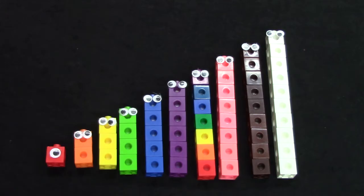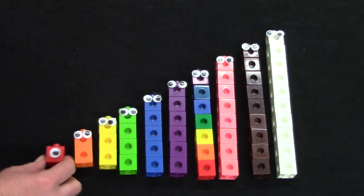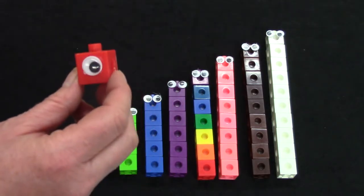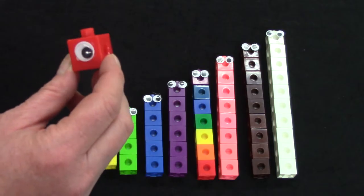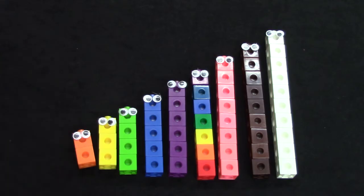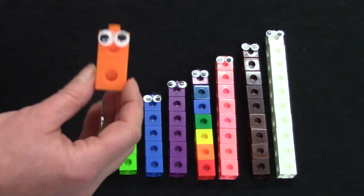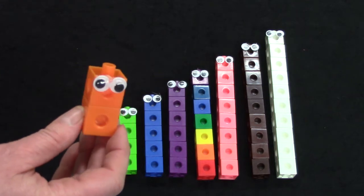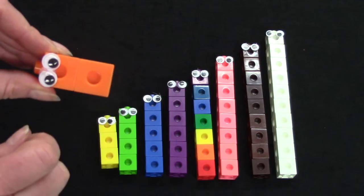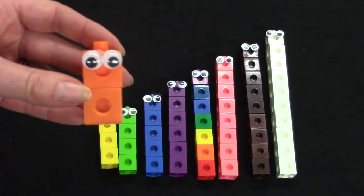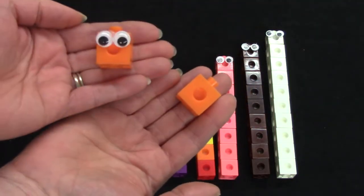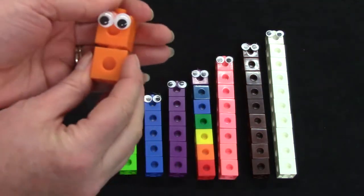For us to have an even number, our cubes would need to have a buddy. 1 is an odd number because it's all alone. It doesn't have a buddy. So I'm going to move number 1 out because it is not an even number. The number 2 is an even number. There's 2. 1, 2. The number 2 is an even number because I can put 1 in each hand and I have the same amount. 1, 2. This is an even number.